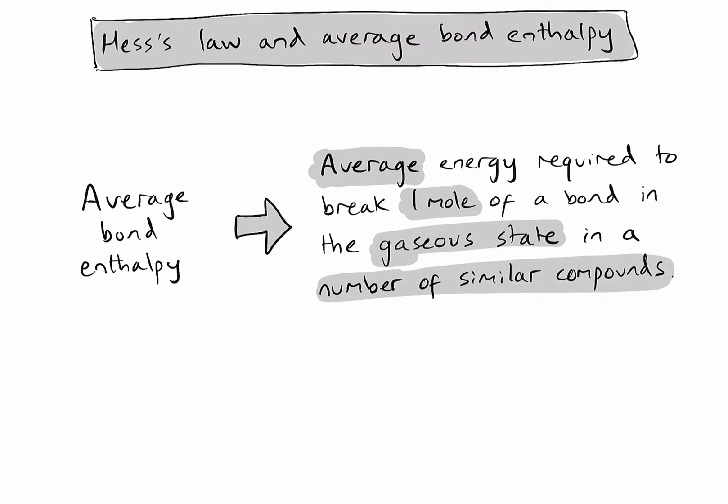Because it is an average value, it's not always going to be 100% accurate when we apply it to a specific chemical reaction. Because in our specific chemical reaction, we're looking at that bond in one single substance and not a number of similar compounds that's used to calculate this data. And this is a common one-mark question that you'll see in IB exams.